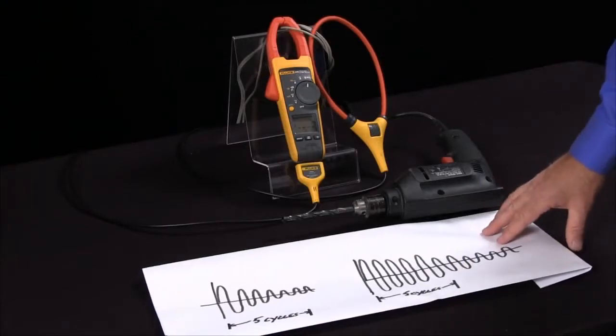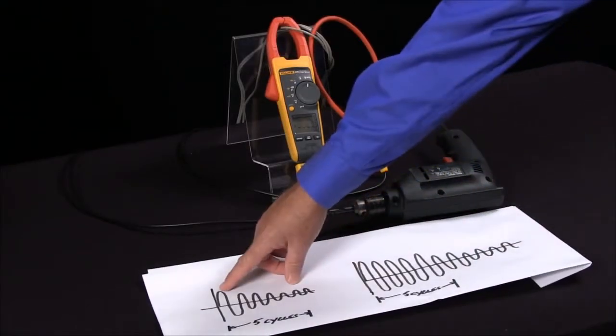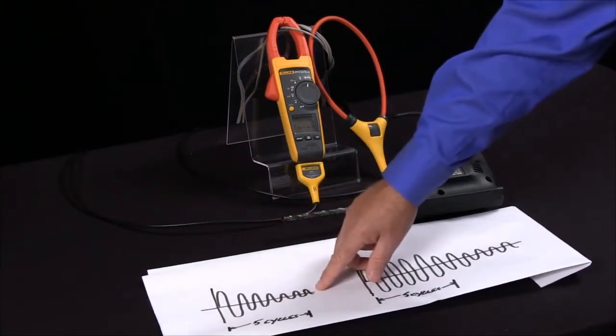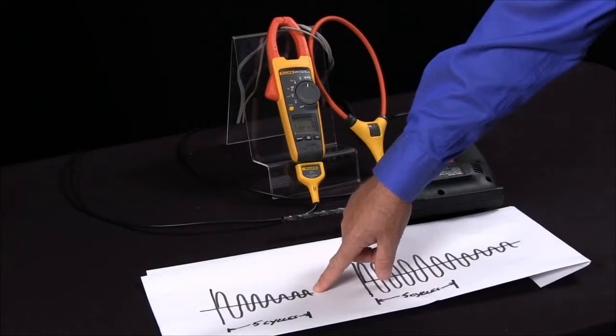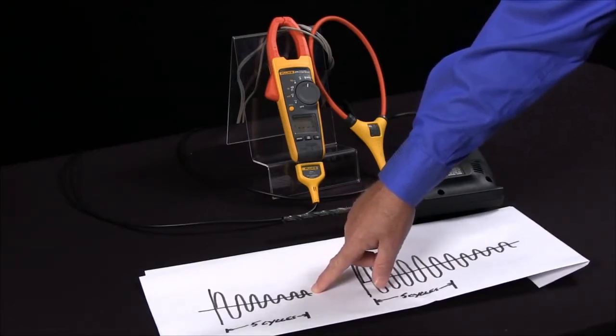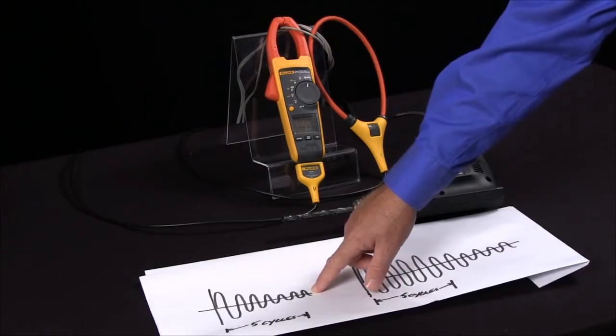Fluke has a unique design in that we don't capture the first peak that we see with the amps. We actually integrate over 5 cycles. This gives you a truer measurement of your inrush current, which is more accurate than just doing a fast peak measurement.